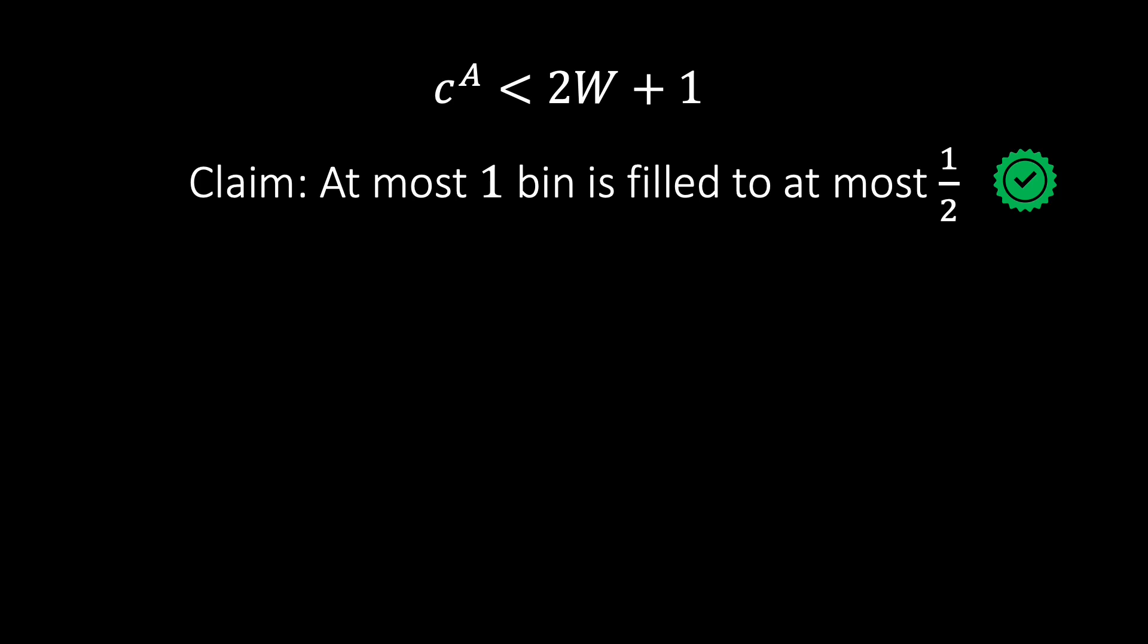Now let's say our algorithm uses CA bins. Then thanks to the claim, we know that CA minus 1 bins are more than half full. The remaining bin also holds something, so half CA minus 1 must be less than the total weight W. Multiplying, we know that CA is less than 2W plus 1 as required.